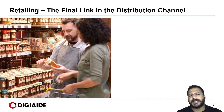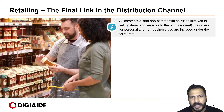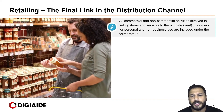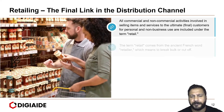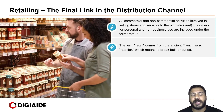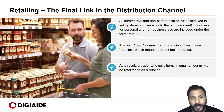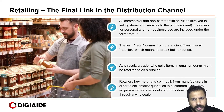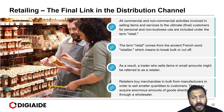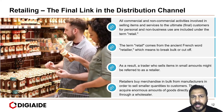Moving on to understanding the dynamics of distribution — in this case, the aspect of retailing. Retailing is the final link in the distribution channel. All commercial and non-commercial activities involved in selling items and services to the final customers for personal and non-business use are included under the term retail. The term retail comes from the ancient French word 'retailer,' which means to break bulk or cut off. As a result, a trader who sells items in small amounts might be referred to as a retailer. Retailers buy merchandise in bulk from manufacturers in order to sell smaller quantities to customers.